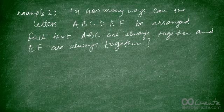Try this example on your own: in how many ways can the letters A, B, C, D, E, F be arranged such that A, B, C are always together and E, F are always together? Remember, we are arranging these objects in a straight line. Press the pause button and try the question on your own.